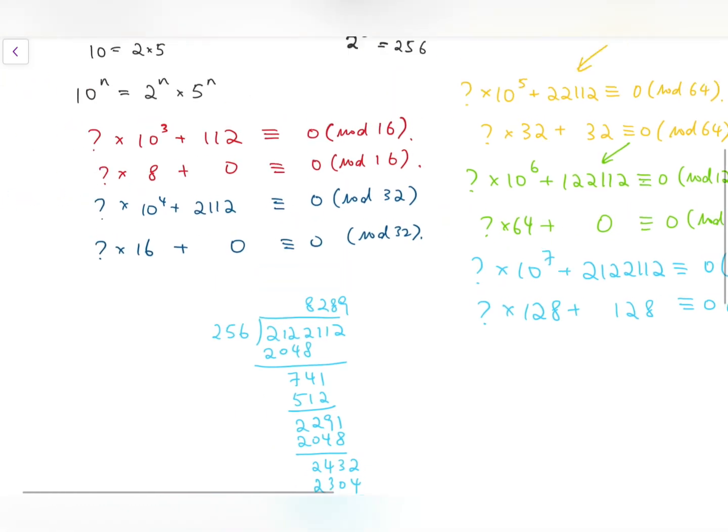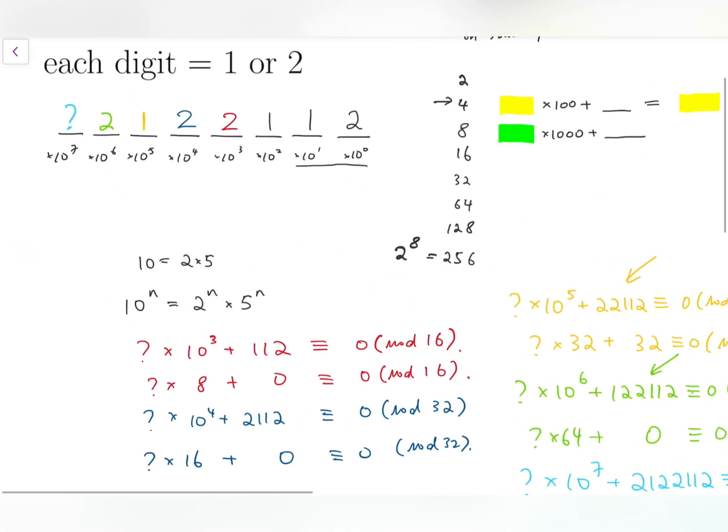So we know the last digit, the leftmost digit, has to be 1. So now we have 12122112.